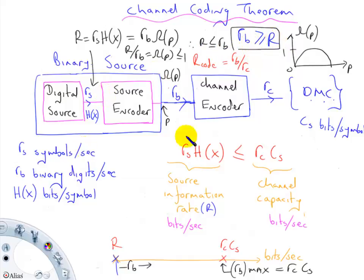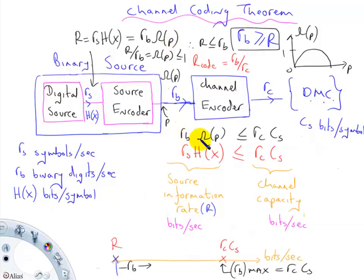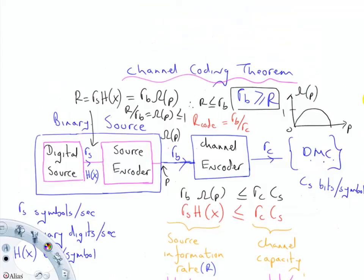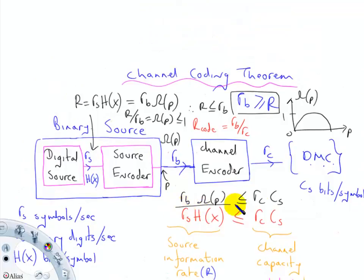So why did I do all of this? Well, here I can now simply write RB omega p is less than or equal to RC CS. These two are the same as shown here. So now I'm looking at the information rate coming out of the binary source, and we know that the rate at which information comes out must be less than or equal to the channel capacity.